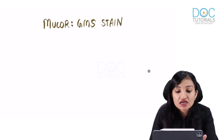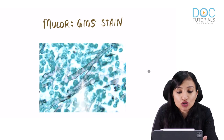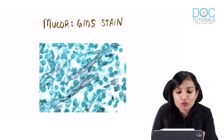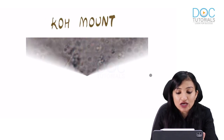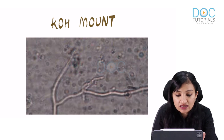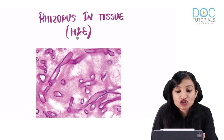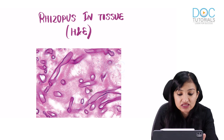The picture of Mucor on GMS stain shows irregular, broad, ribbon-like hyphae. On KOH mount, the hyphae can be seen branching at right angles and are aseptate. The picture of Rhizopus in tissue stained with Hematoxylin and Eosin again shows non-septate, broad, irregularly-looking hyphae.